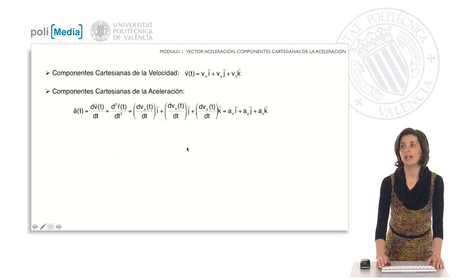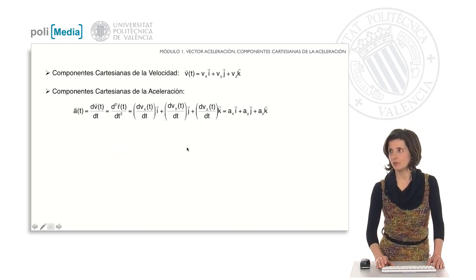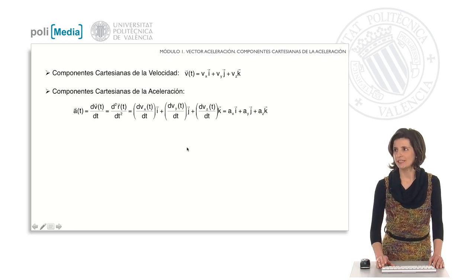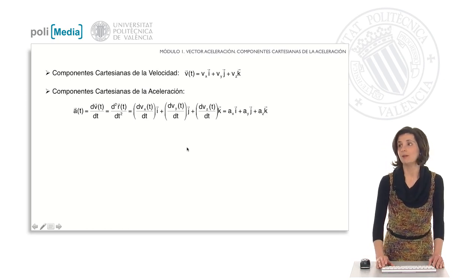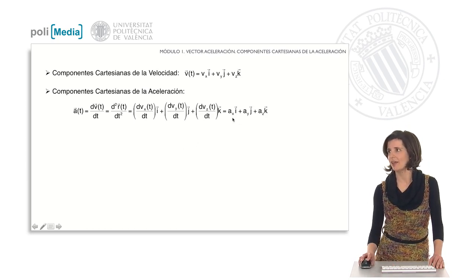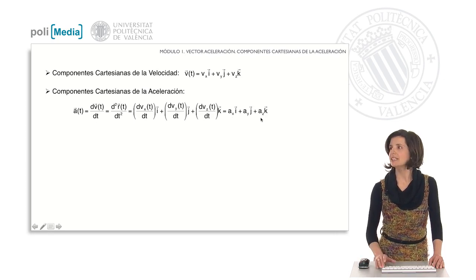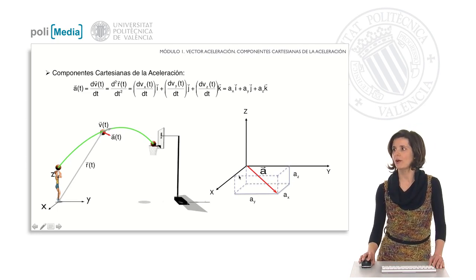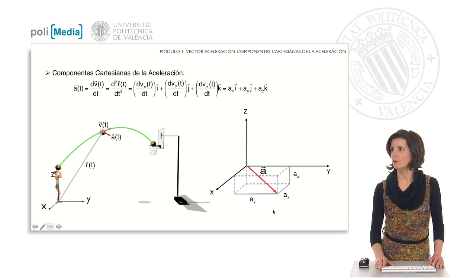Let us now calculate the Cartesian components of this vector. Since the acceleration vector is the derivative of the velocity vector, to calculate the Cartesian components of the acceleration vector we will take the derivative with respect to time of the Cartesian components of the velocity. We will call these Cartesian components aₓ, aᵧ, and a_z, and they correspond to the projection of the acceleration vector on each of the Cartesian axes, as shown in the figure.